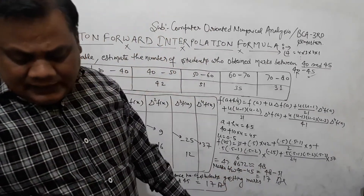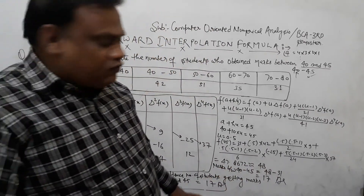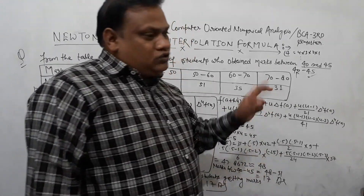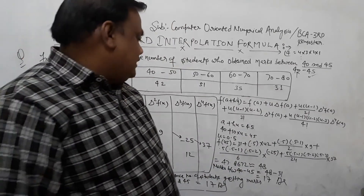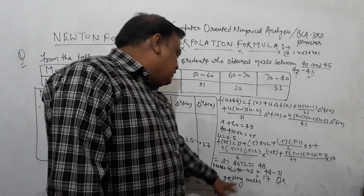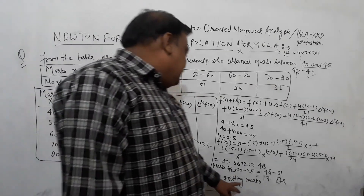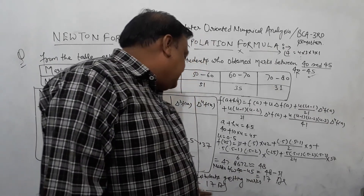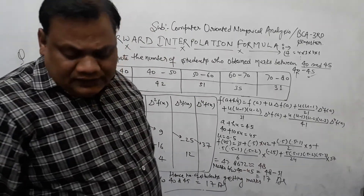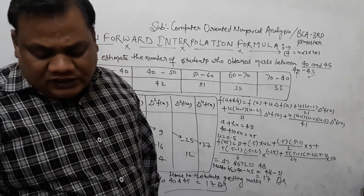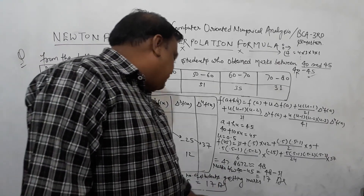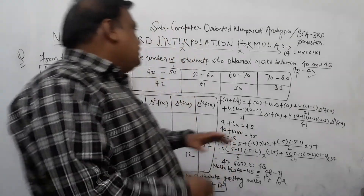In your exam answer, you should write: number of students getting marks less than 45 is 48, and number of students getting marks less than 40 is 31. Then subtract: 48 minus 31 equals 17. This gives you the number of students getting marks between 40 and 45.